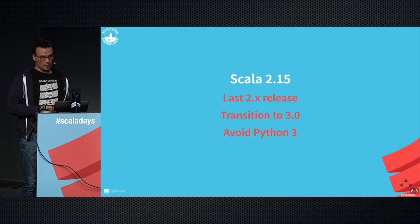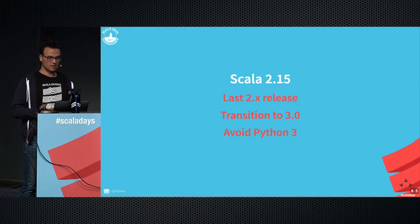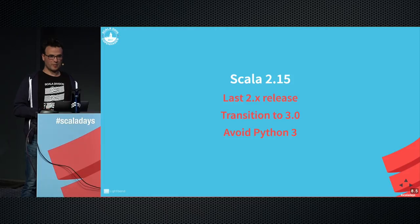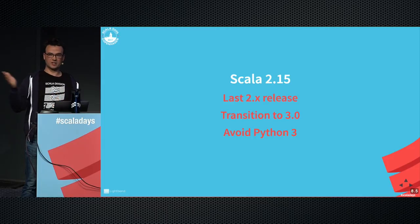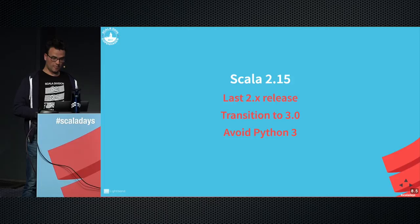We might need a 2.15 before 3.0 to really set the scene and be comfortable, because we do not want and will not have the Python 2/3 schism. Everything in 3.0 will have to motivate why the change is there and what value it brings. We're not going to inflict random paper cuts. Our job is to lay out the red carpet for you to upgrade to 3.0. After 2.14 or 2.15, the 2 series will be done, and 3.0 will be 3.0.